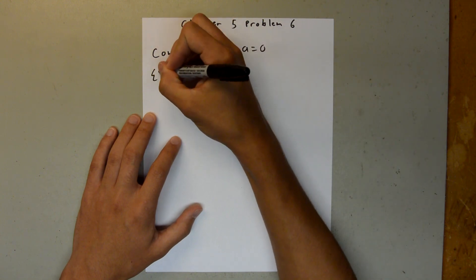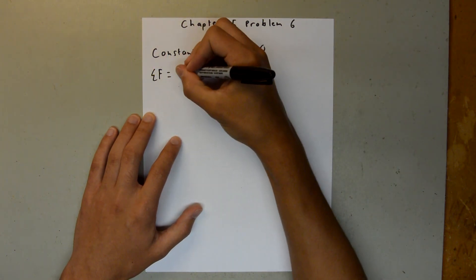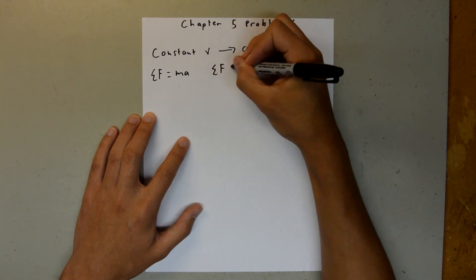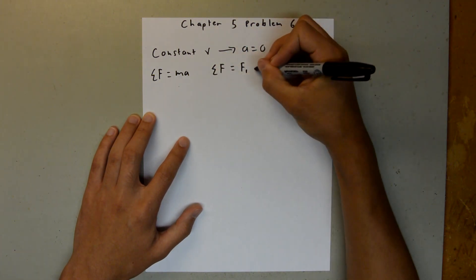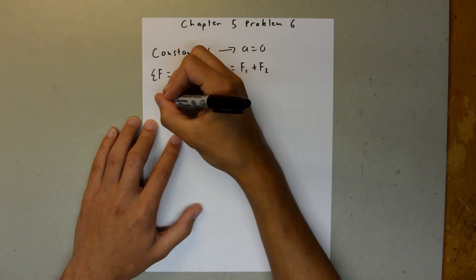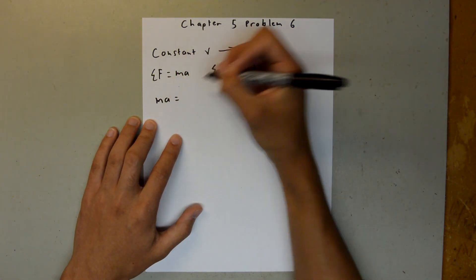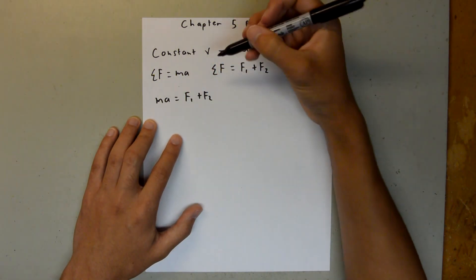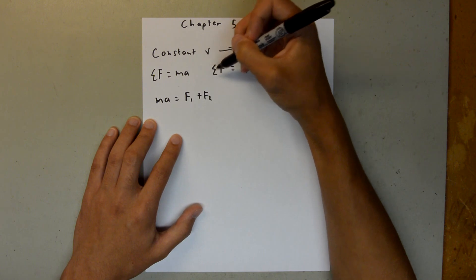So, we know that the sum of the forces is equal to Ma, and we also know the sum of the forces is going to be equal to that first force plus that second force. So, we can say Ma is equal to F1 plus F2, since both of these equal to the sum of the forces.